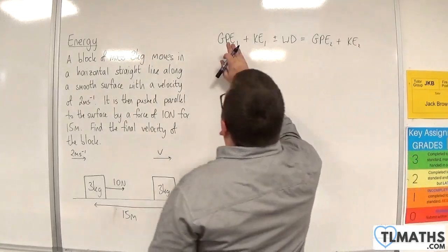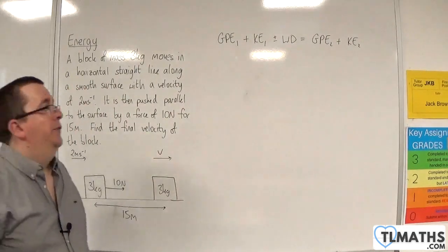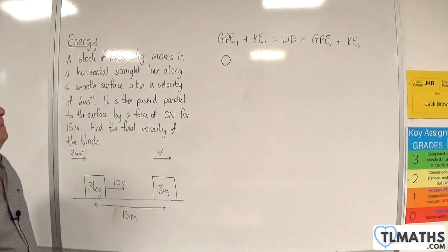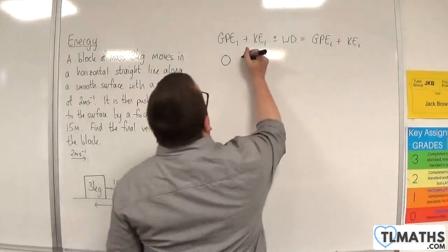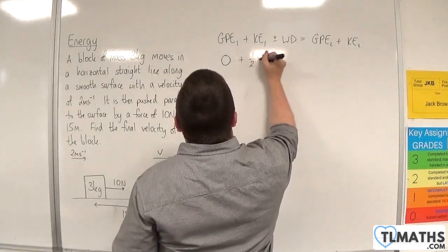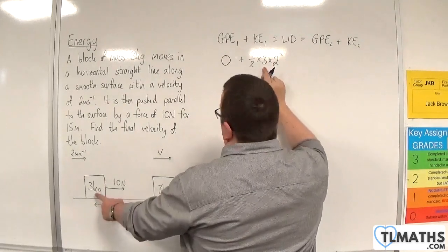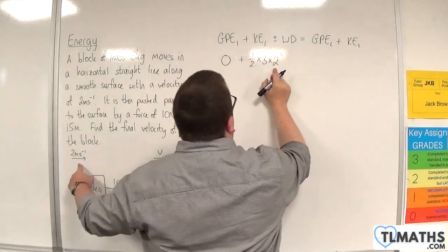So the initial gravitational potential energy. It's already on the ground. So H will be zero. So Mgh will be zero. So then we've got the initial kinetic energy, which will be one half times M times V squared. So M we know is three kilos. And V initial speed is two meters per second or initial velocity.